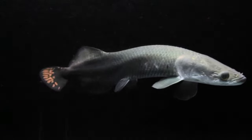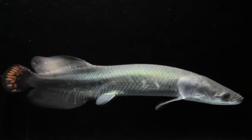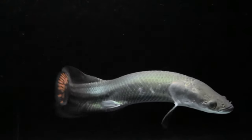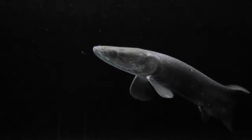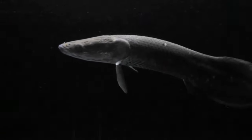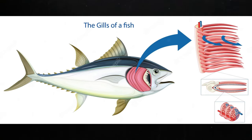As a fish swims, water is forced over its gills. The water passes through the fish's mouth and over the gills, where the oxygen is extracted. The oxygen is then absorbed into the fish's bloodstream and transported to the rest of the body.